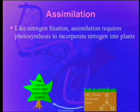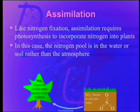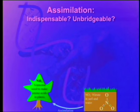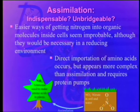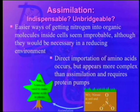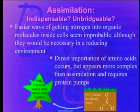What about assimilation? Like nitrogen fixation, assimilation requires photosynthesis to incorporate nitrogen into plants. In this case, the nitrogen pool is in the water or soil rather than the atmosphere. Is it indispensable and unbridgeable? Easier ways of getting nitrogen into organic molecules inside cells seem improbable, although they would be necessary in a reducing environment. Direct importation of amino acids, at least by some organisms, is known, but it appears more complex than assimilation and requires protein pumps. To get amino acids in, you need something that is a product of amino acids in the first place — again, a catch-22 situation.